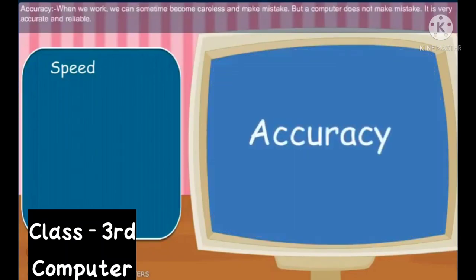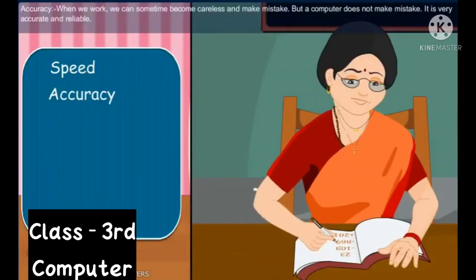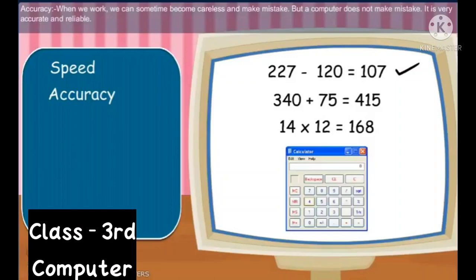The next characteristic is Accuracy. When we work, we can sometimes become careless and make mistakes. But a computer does not make mistakes. It is very accurate and reliable.